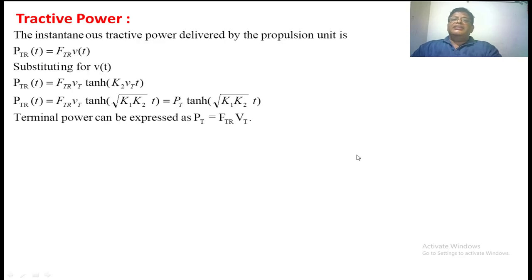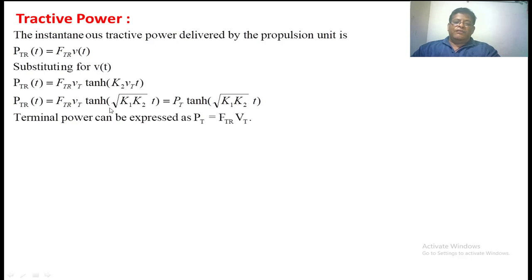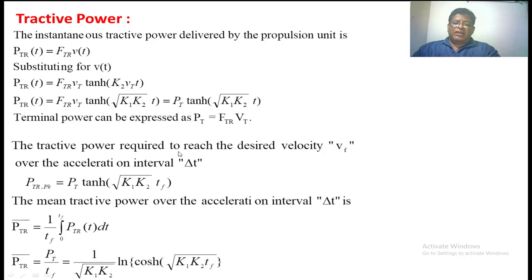The instantaneous tractive power delivered by the propulsion unit is equal to P_TR(t) = F_TR · V(t). Since V_f = V_T · tanh(K2·V_T·t), substituting this expression, we get the power delivered by the propulsion unit as P_TR(t) = F_TR · V_T · tanh(K2·V_T·t). Substituting the value of V_T, this becomes P_TR(t) = F_TR · V_T · tanh(2·sqrt(K1·K2)·t). This is the expression for the tractive power required to reach the final velocity V_f over the acceleration interval.